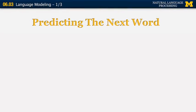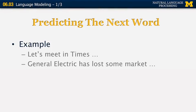The problem of language modeling is also related to the problem of predicting the next word in a sequence. For example, if I start the sentence by saying 'let's meet in times...', can you predict the next word? Well, there are probably several different things that can come next, but a very likely one would be the word 'square' — 'let's meet in times square.'